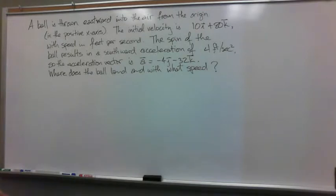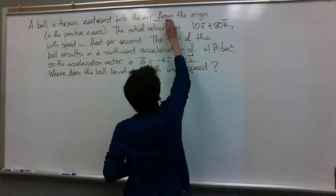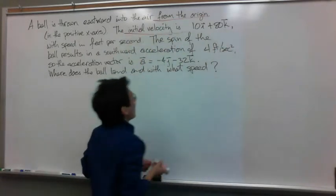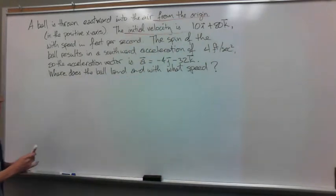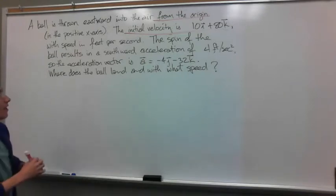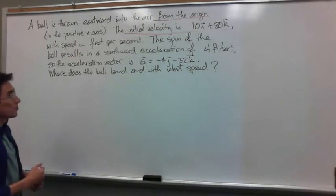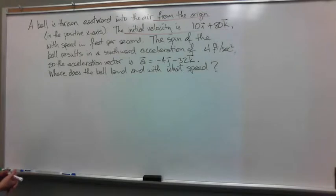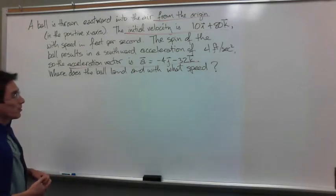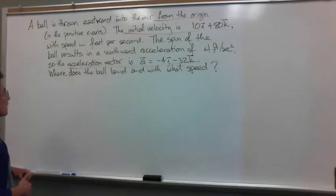Okay, we have this problem. It says a ball is thrown eastward into the air from the origin in the positive x-axis. The initial velocity is 10 in the x-direction, 0 in the y-direction, and 8 in the z-direction, with speed in feet per second. The spin of the ball results in a sideward acceleration of 4 feet per second squared. So the acceleration vector is 0 in the x-direction, minus 4 in the y-direction, and minus 32 in the z-direction. The question is: where does the ball land and with what speed?